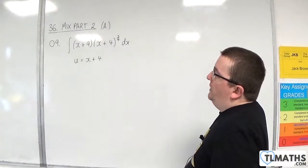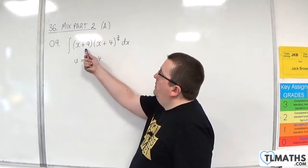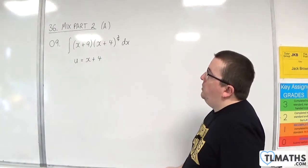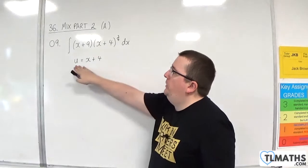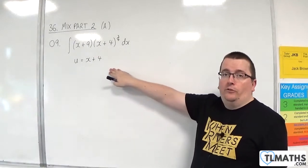This is number 9, so we've got the integral of x plus 9 times x plus 4 to the 3 quarters dx, and we've been told to use the substitution u is equal to x plus 4.